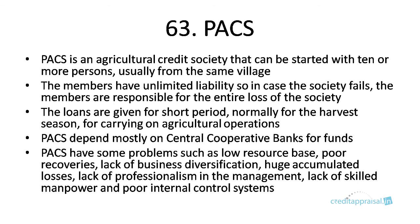PACS — Primary Agricultural Credit Society — is an agricultural credit society that can be started with 10 or more persons, usually from the same village. The members have unlimited liability, meaning if the society fails, the members are responsible for the entire loss. Loans are usually given for short periods for the harvest season and for carrying on agricultural operations. They depend mostly on central cooperative banks for funds.